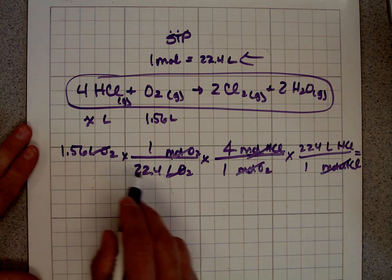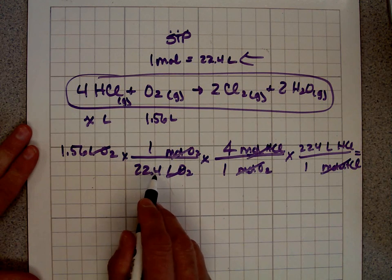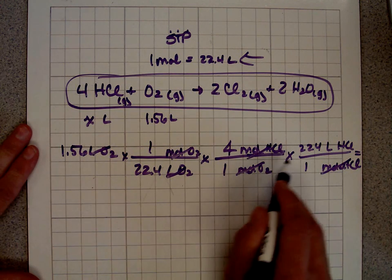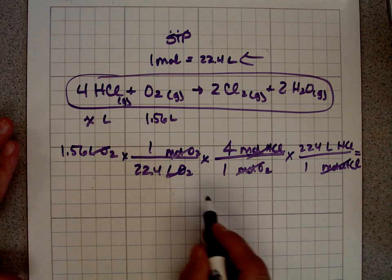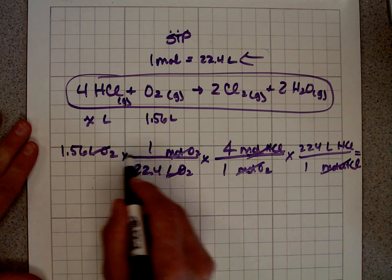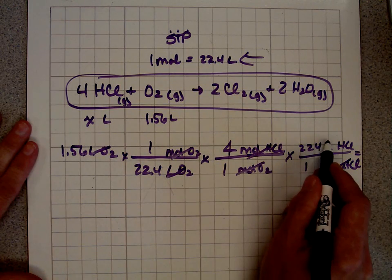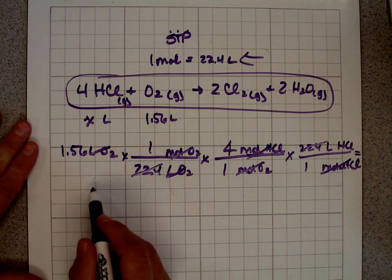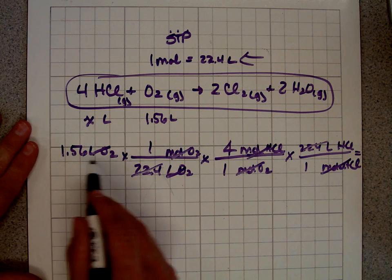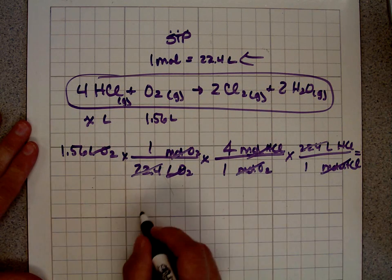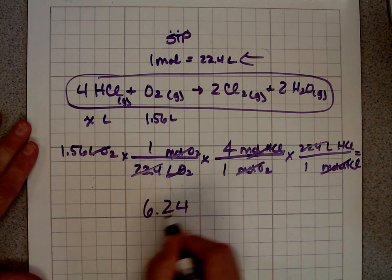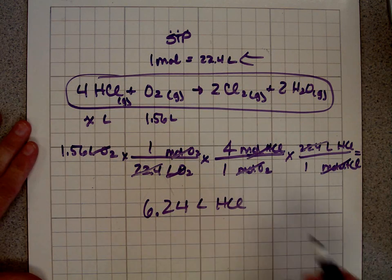1.56 times 1 divided by 22.4 times 4 divided by 1 times 22.4. That's a lot of work. Let's do this. If I look, I see I have a 22.4 in the numerator and also in the denominator. That means I can take 1.56 times 4 and get my answer. And my answer is 6.24 liters of hydrochloric acid.